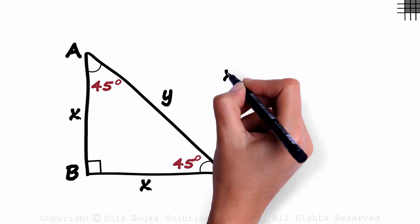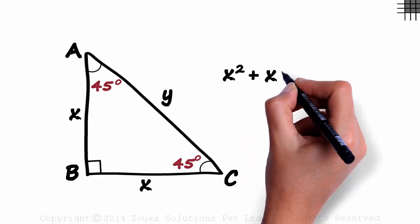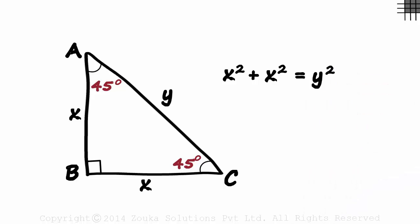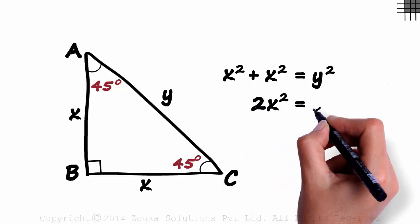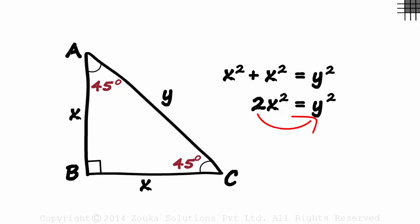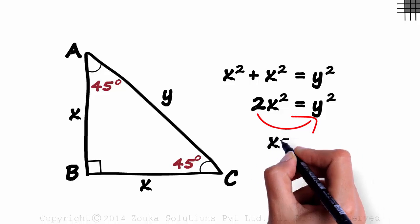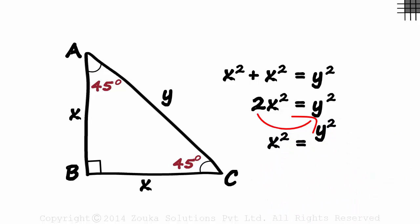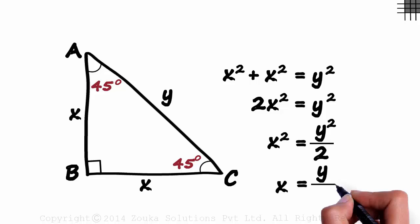we can say that x squared plus x squared is equal to y squared. So 2x squared will equal y squared. Transposing 2 to the other side, we get x squared as y squared by 2. And taking the square root on both sides, we get x as y by root 2.